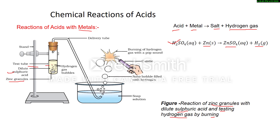As soon as we add the sulfuric acid, some bubbles start to form. These bubbles are of hydrogen gas. To prove that these bubbles are of hydrogen gas, they are passed through the delivery tube into a test tube containing soap solution.